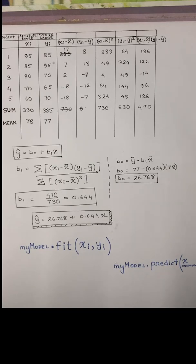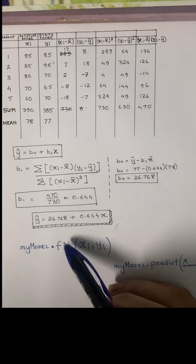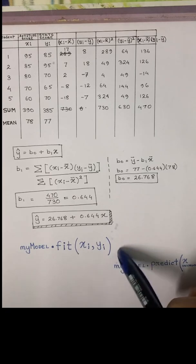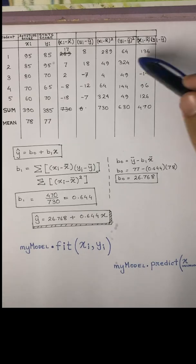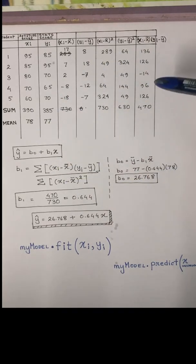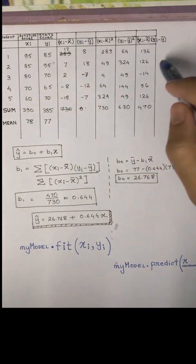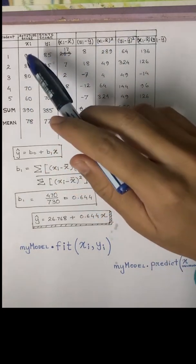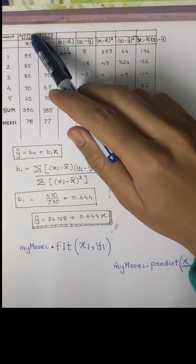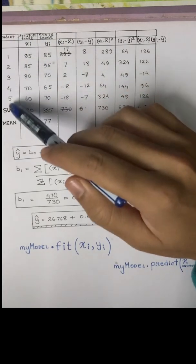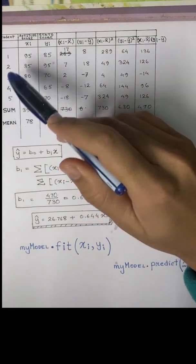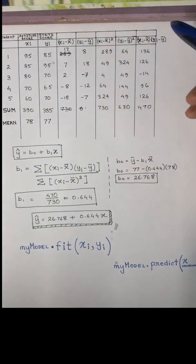Let us take a regression problem, a general problem that we find in most statistics books. I've taken a question here which has one variable showing the aptitude score and the statistics scores of various students. There are five students - it's a general sum that you find in most statistics books.